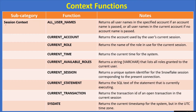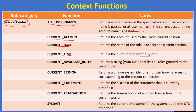The second subcategory from the context functions is session context. Here we have functions like all_user_names, which returns all user names in the specified account if an account is passed, or all user names in the current account if no account name is passed. current_account returns the account used by the user's current session. current_role returns the name of the role in use for the current session. current_available_roles returns a string that lists all roles granted to the current user. current_session returns a unique system identifier for the Snowflake session corresponding to the present connection.